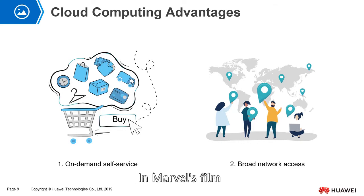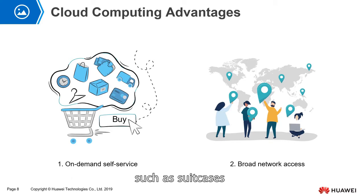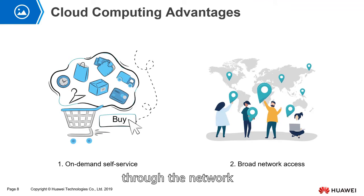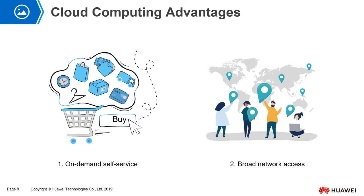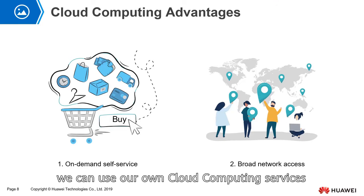In Marvel's film Iron Man, sometimes Iron Man uses his own things such as a suitcase or watch to summon his armor. But in more cases, Iron Man summons his armor through the network — whether Wi-Fi or 4G. As long as we are connected to the internet, we can use our own cloud computing services.